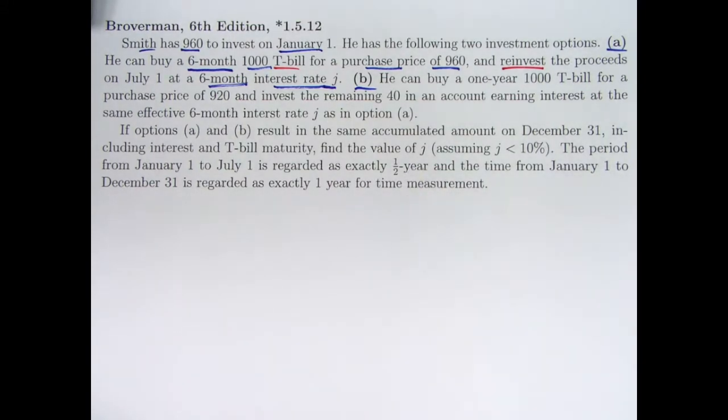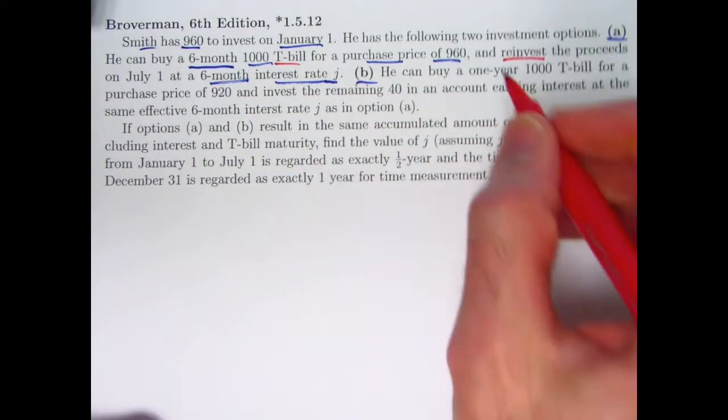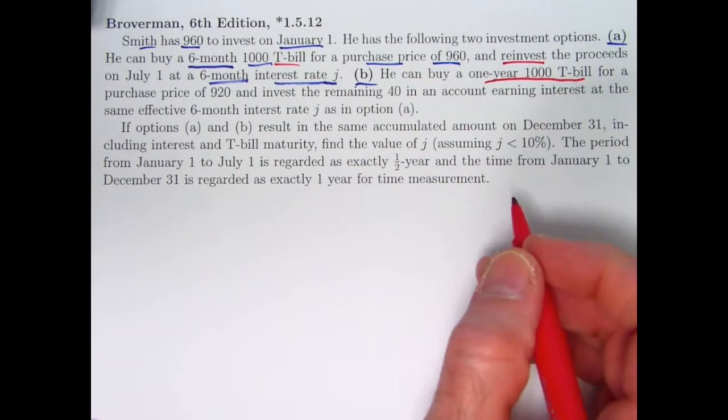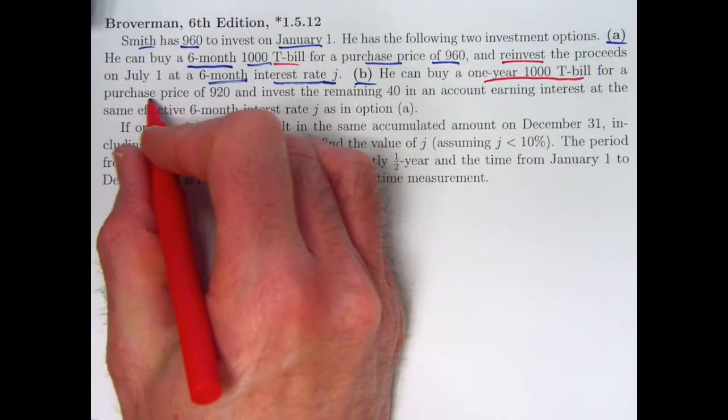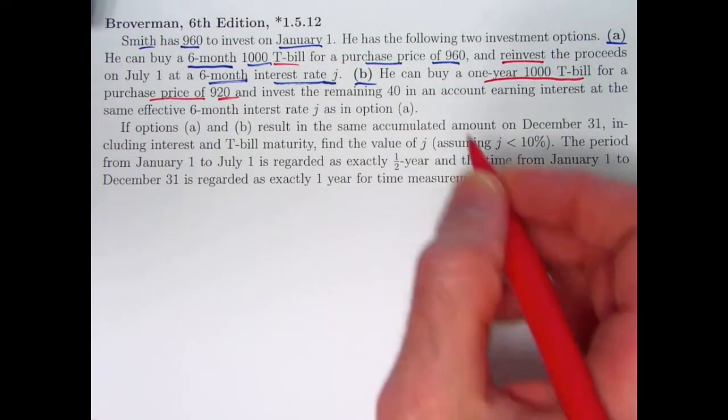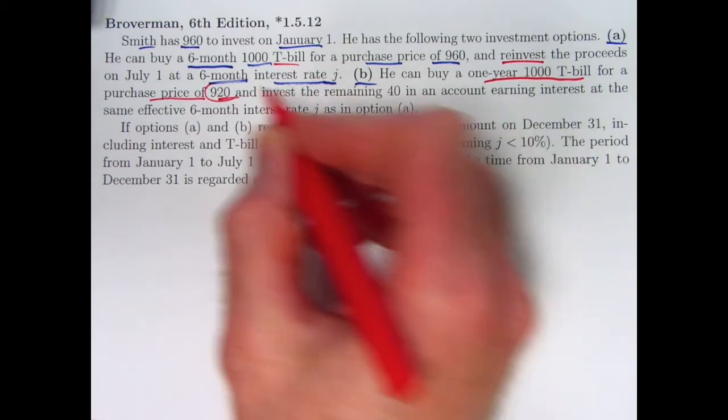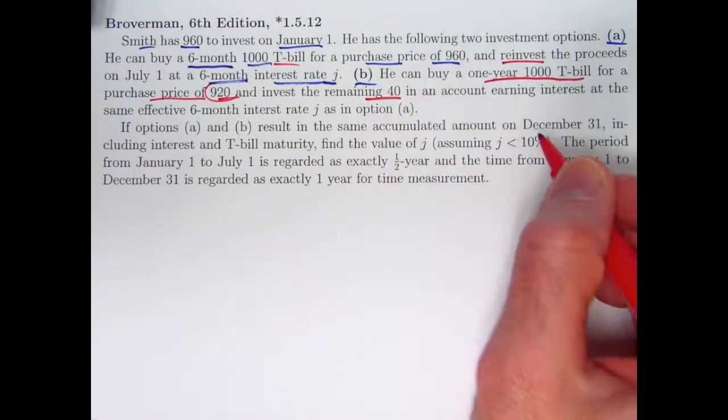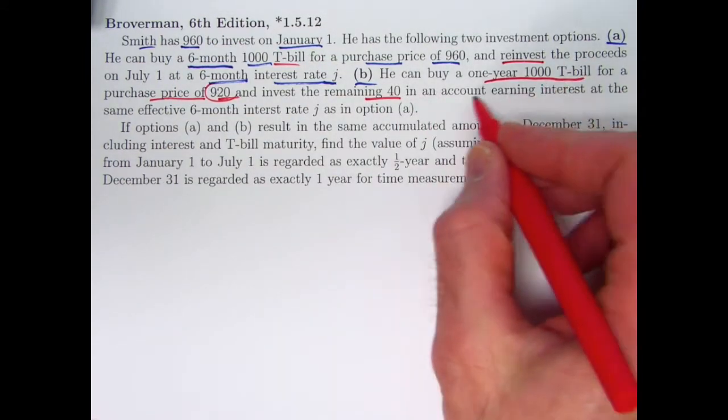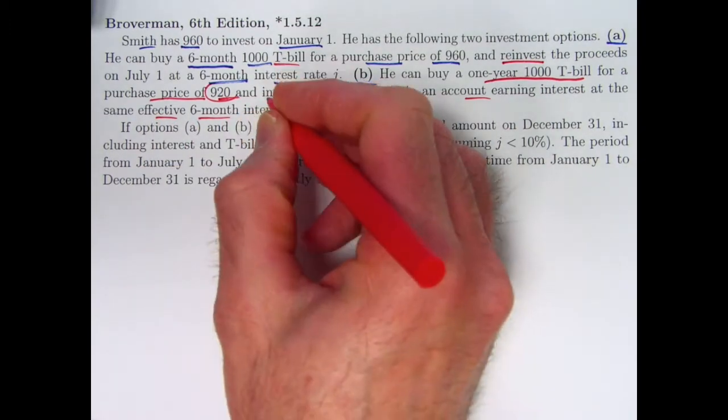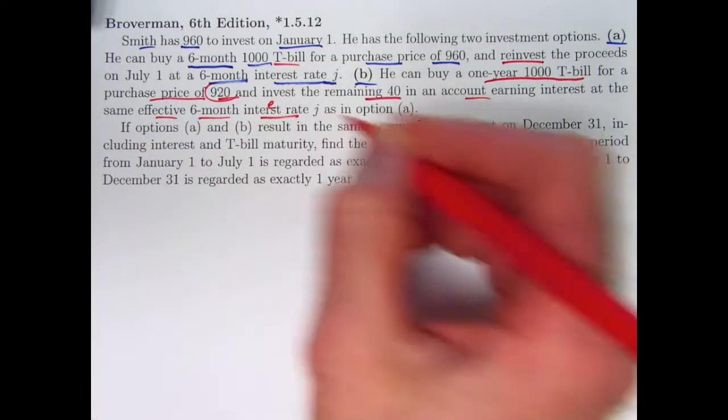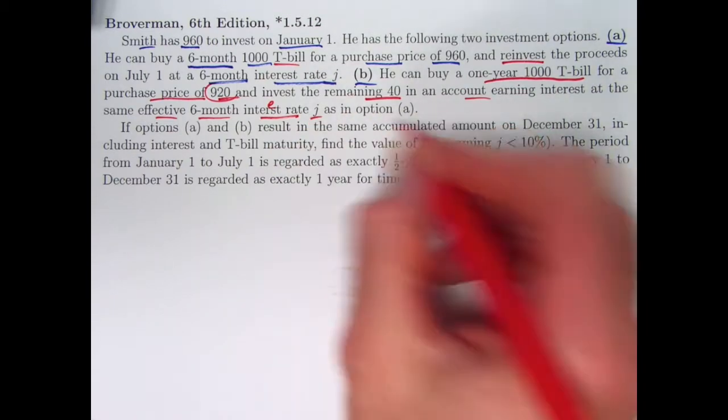Option B: he can buy a one year 1000 T-bill so after one year it's going to mature to a thousand for a smaller purchase price of $920, meaning he's got another $40 to invest in something else, an account earning interest at the same six month interest rate J as in option A.